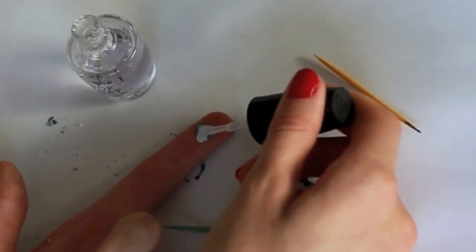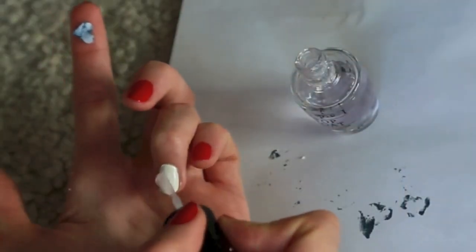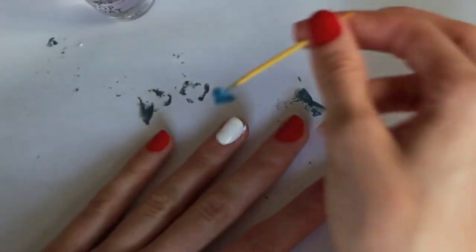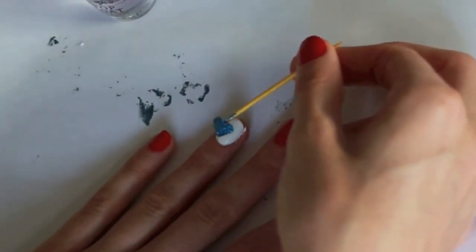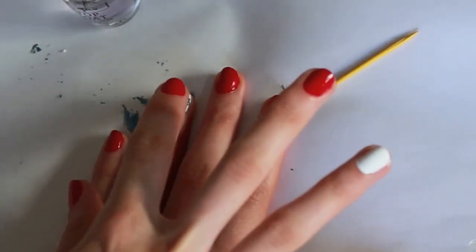I'm going to add a very small amount of clear top coat to the back of my heart, and I'm also going to add a very small amount to the nail that I want to place it on. From there you can add your heart, and then very gently press it into place.